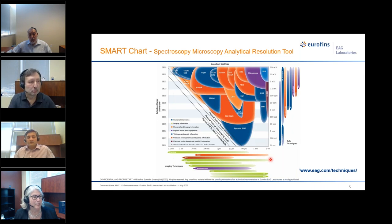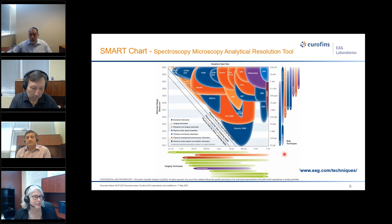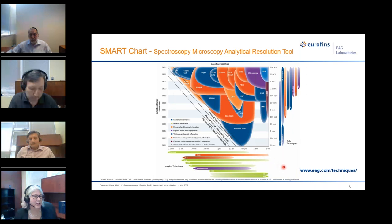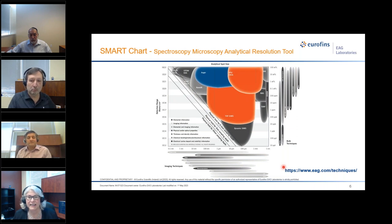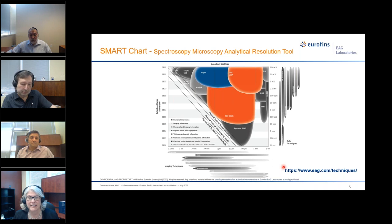Outside of the box are techniques that don't belong in the chart. Techniques on the right don't have a spot size associated with them — they are bulk composition techniques that may consume your entire sample. Techniques at the bottom are imaging techniques and don't provide composition per se. The three highlighted bubbles are the techniques we'll be discussing today. One of the main strengths of Auger is its spatial resolution; TOF-SIMS excels in detection limit; and XPS is the workhorse having both a reasonable spot size, a good detection limit, and the ability to give elemental and organic information.